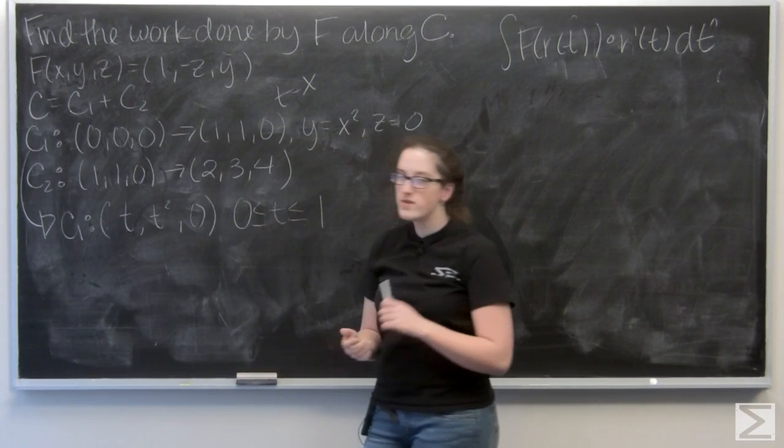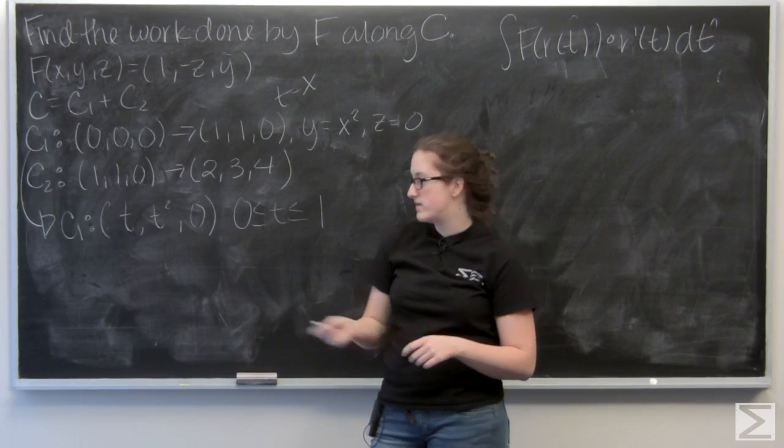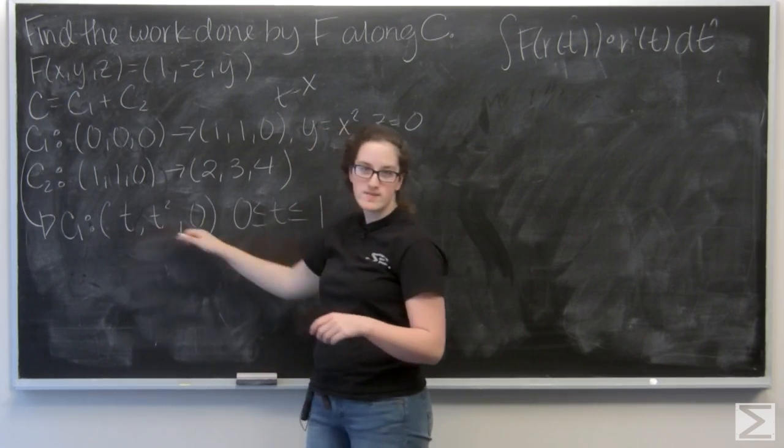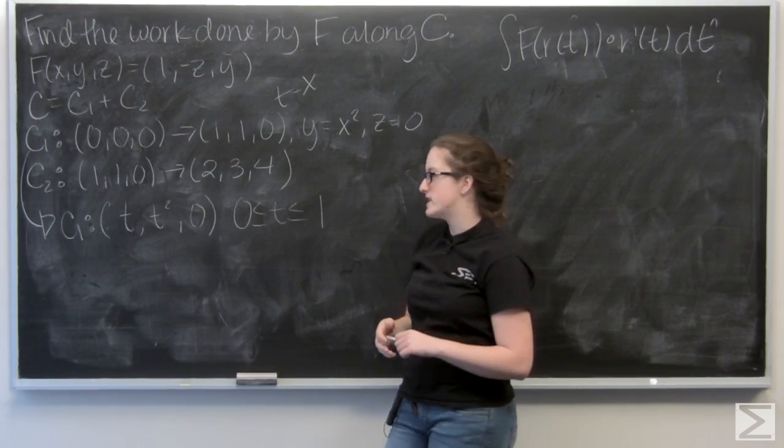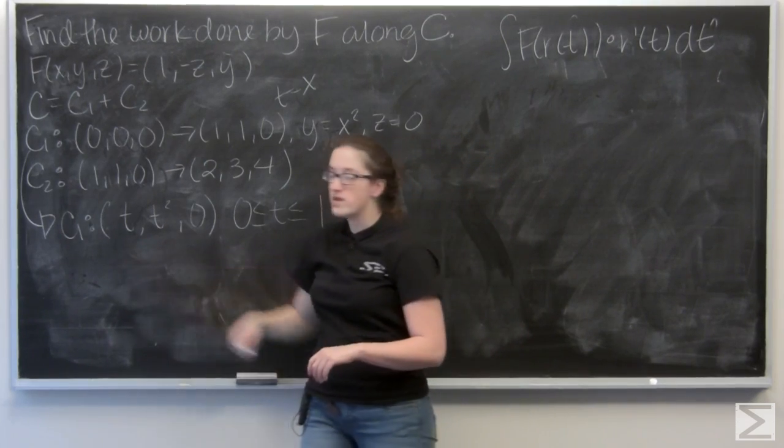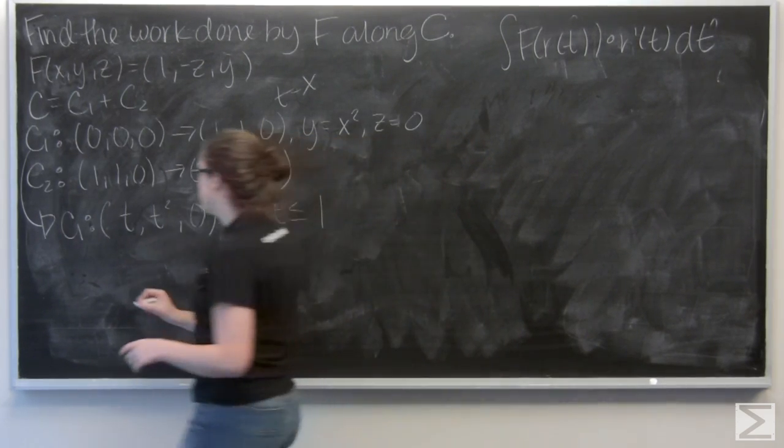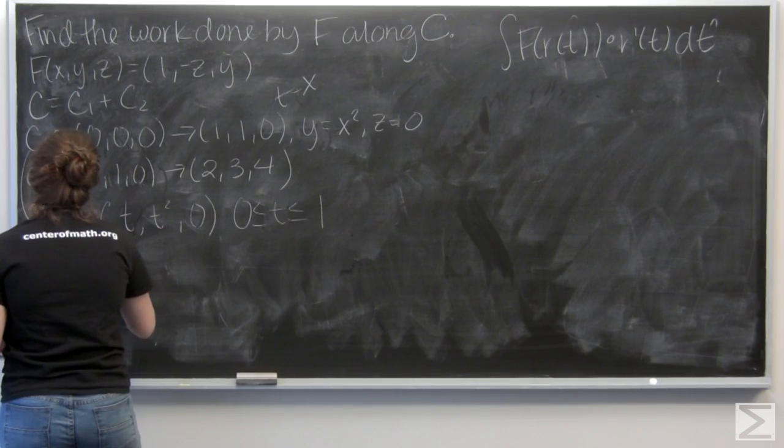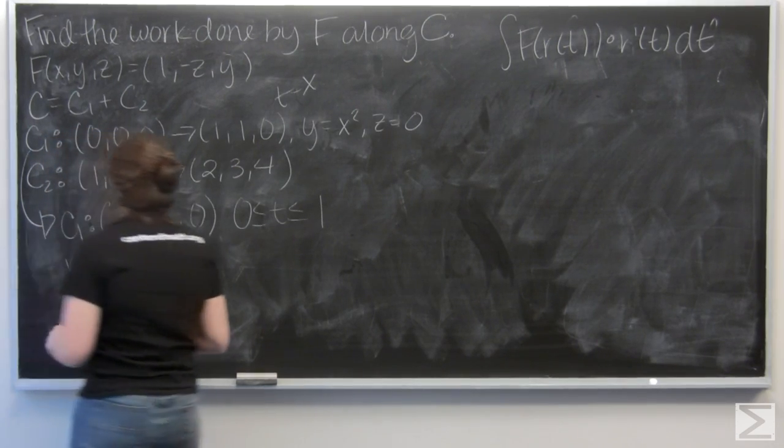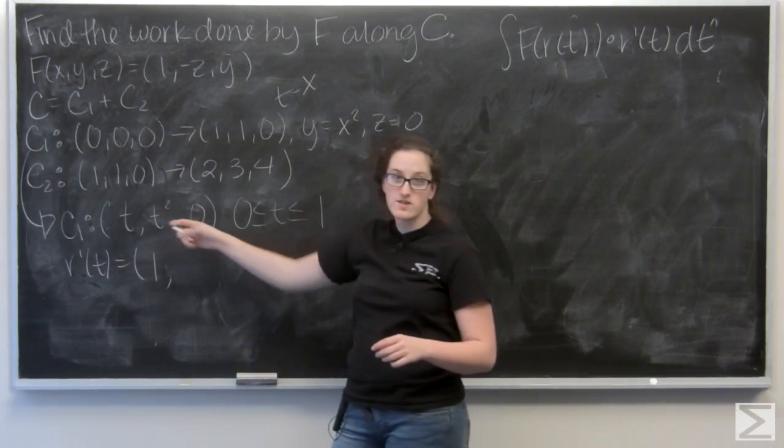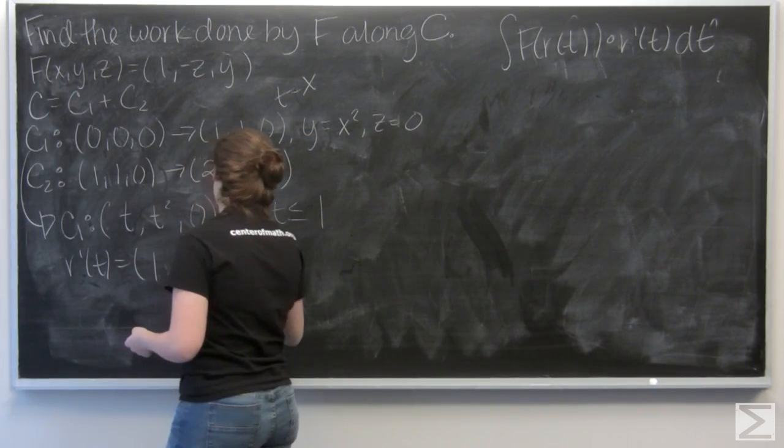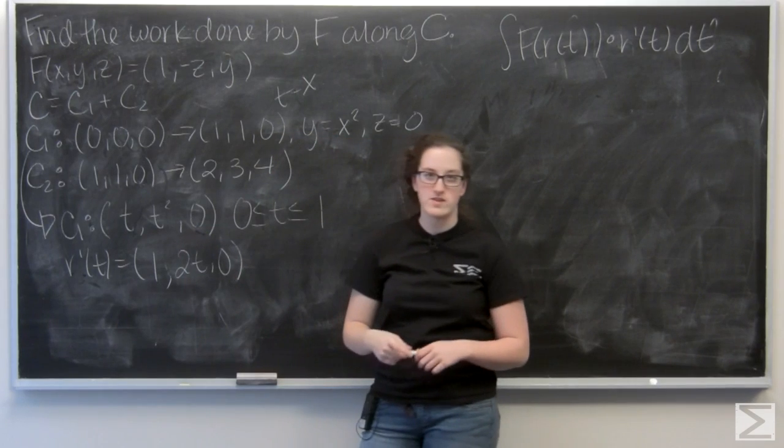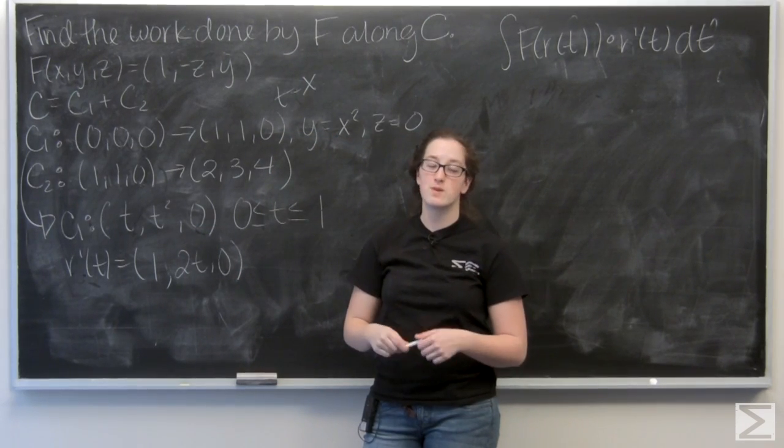So, I have (t, t squared, 0) and I'm going to go from t equals 0 to t equals 1, because here, my x goes from 0 to 1. Alright, now let's go ahead and find the derivative of this. So, this is like my r of t. So, let's find r prime by differentiating each term with respect to t. Well, the derivative of t is just going to be 1. The derivative of t squared is going to be 2t. And then, this last component is 0, so it's still going to be 0 when I take its derivative.